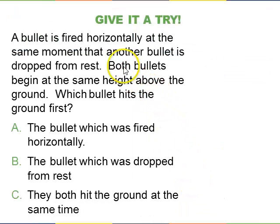So let's give it a try here. A bullet is fired horizontally at the same moment that another bullet is dropped from rest. Both bullets begin at the same height above the ground. Which bullet hits the ground first? A, the bullet that was fired horizontally, B, the bullet which was dropped from rest, or C, they both hit the ground at the same time. Please think about that for a moment, and pause the video, and then resume.